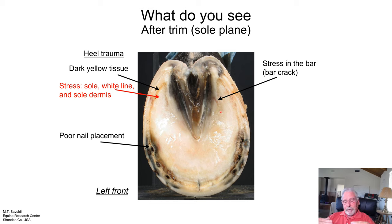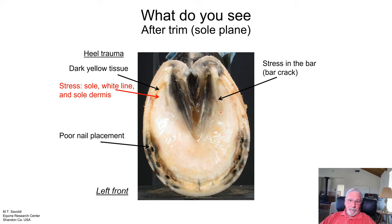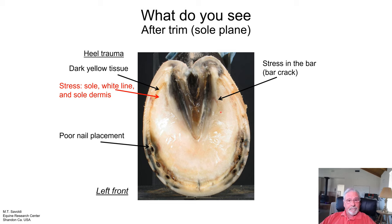Remember that the horseshoe has very little to do with protecting body weight. The body weight comes down the skeleton and the P3 bone is standing on top of the sole. The horseshoe protects the hoof wall, but it's hollow in the center.